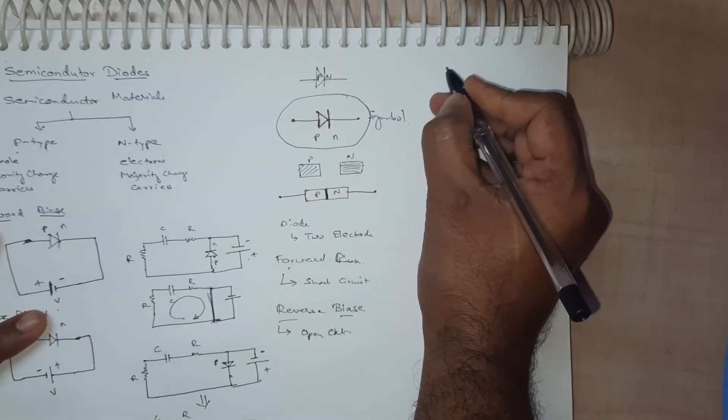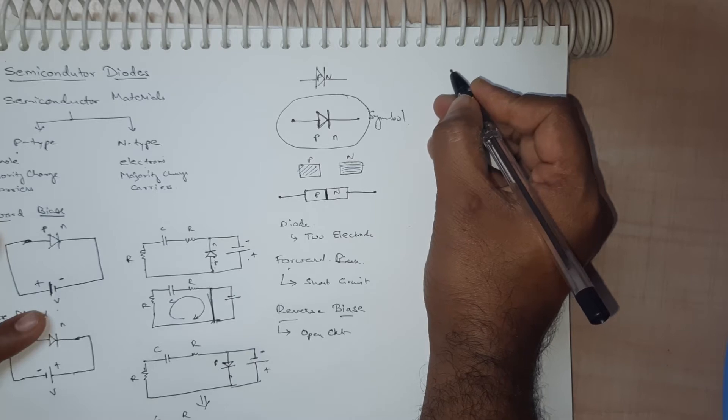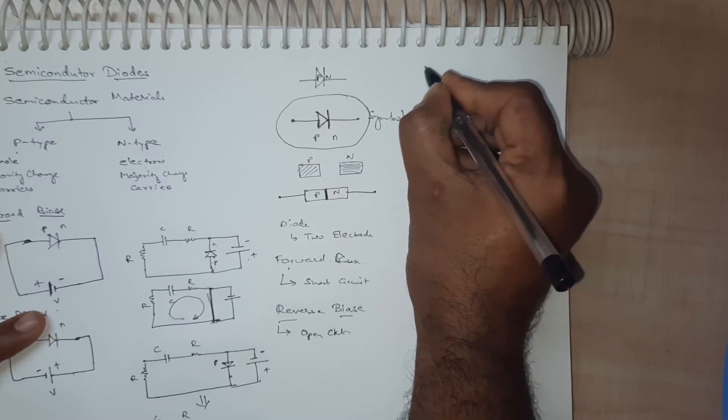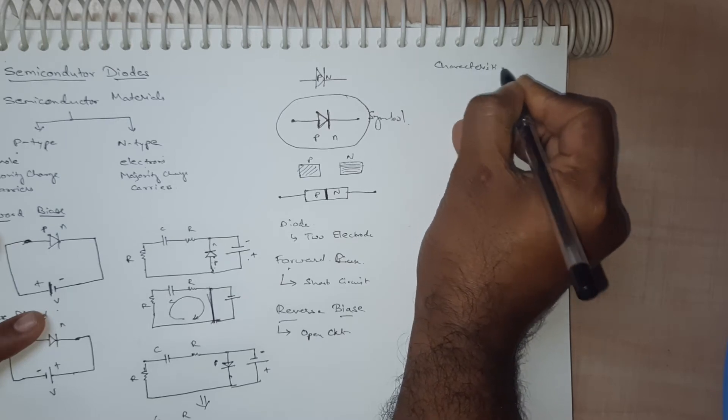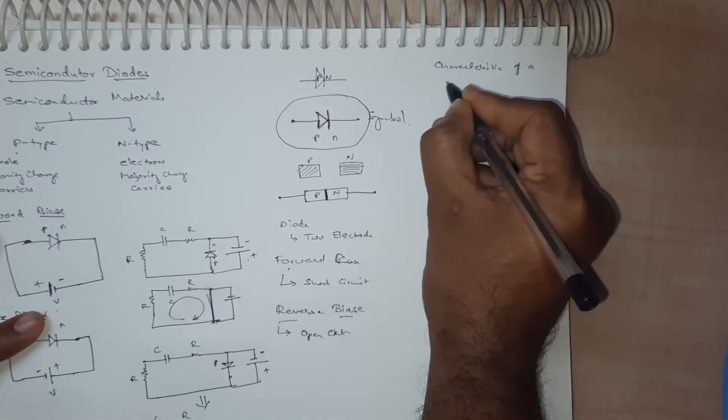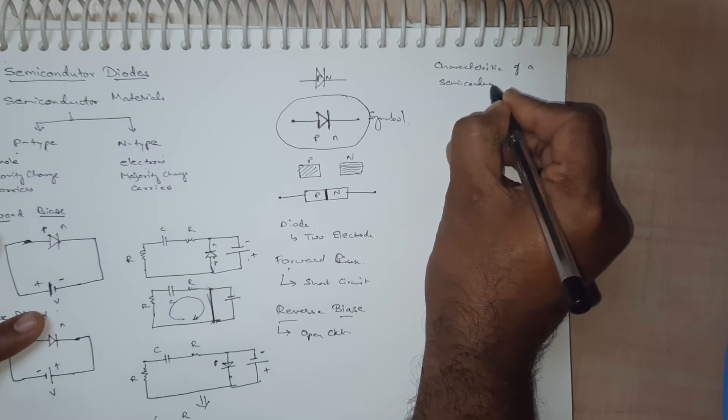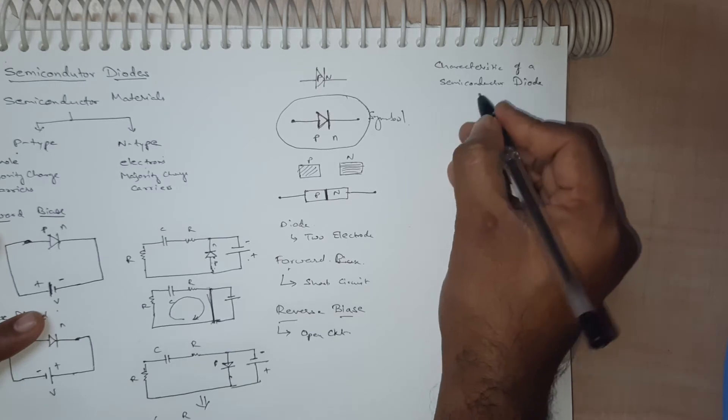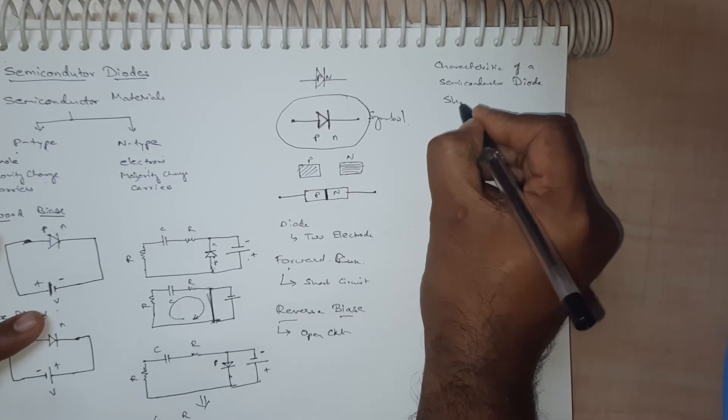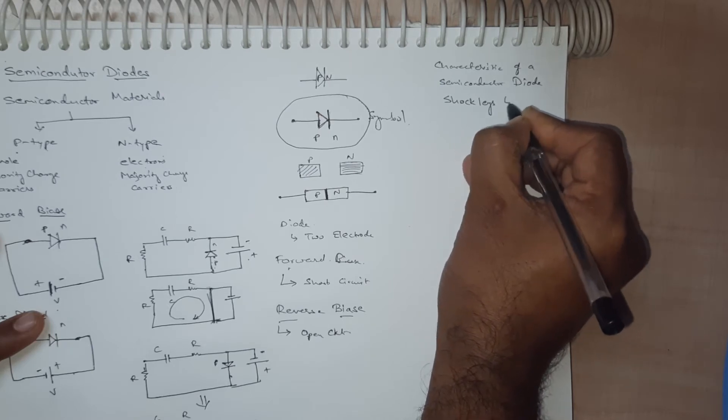So let me tell about some of the important current equation of a diode, the characteristics of a semiconductor diode equation or you can say Shockley's equation.